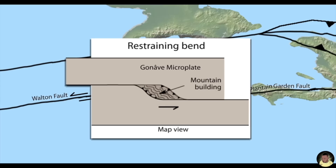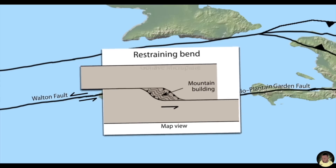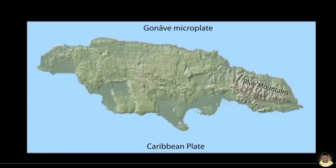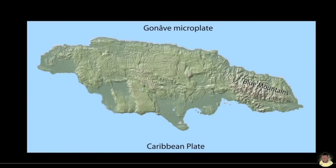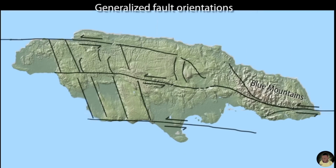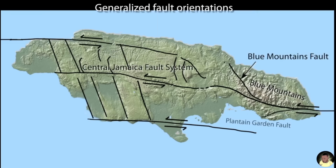Over millions of years, displacement between the Gonâve Microplate and the Caribbean Plate in the restraining bend has broken the oceanic crust of Jamaica into blocks separated by strike-slip and thrust faults. The resulting uplift is responsible for Jamaica being an island and is continuing to raise the Blue Mountains.